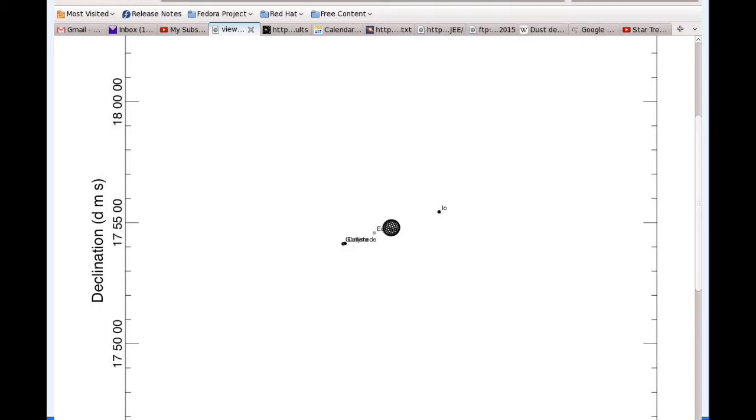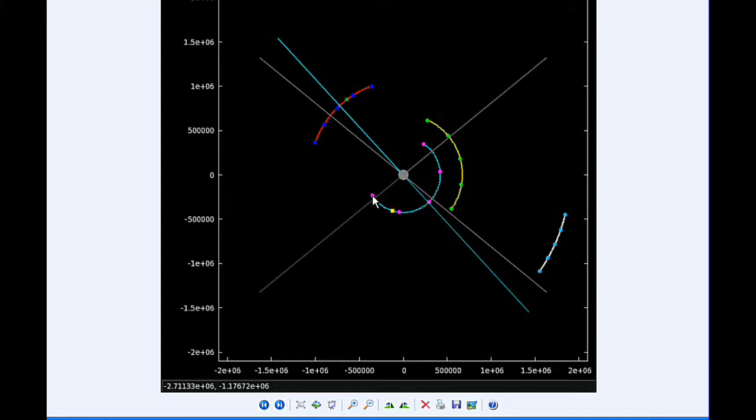Io begins the day in Quadrant 3 heading west near its western elongation, going to be moving into Quadrant 4. Europa starts the day in Quadrant 1 heading east having just moved behind Jupiter. Ganymede starts in Quadrant 2 heading west and Callisto spends all day in Quadrant 1 heading east.